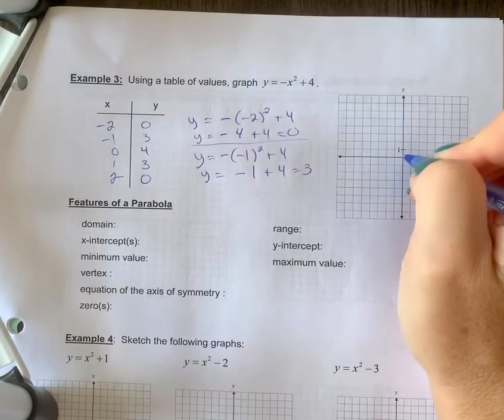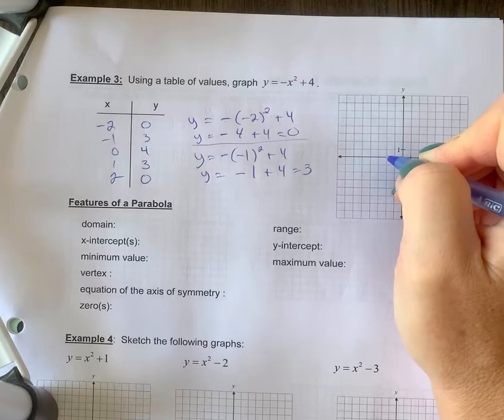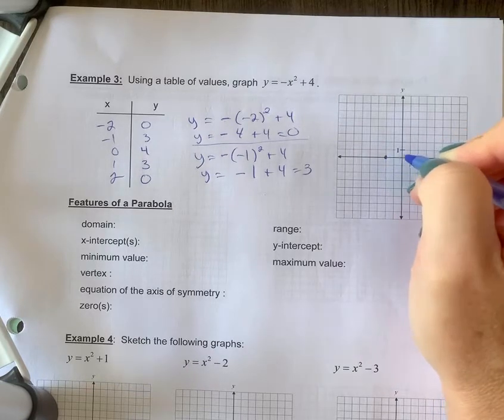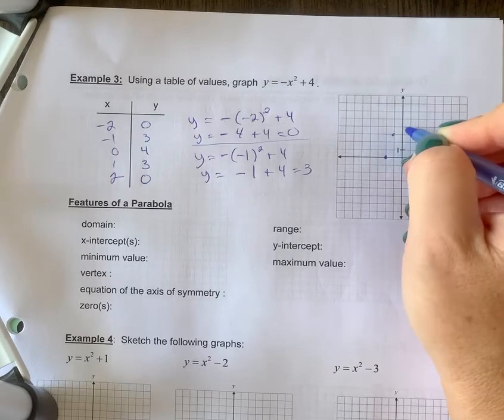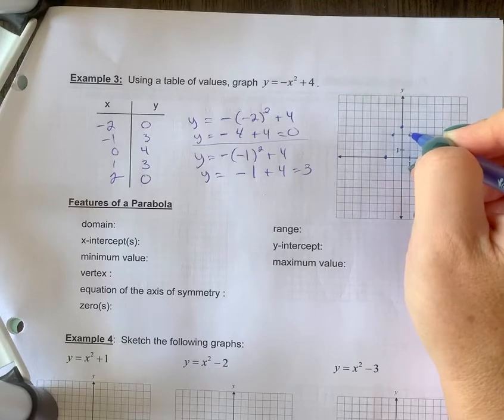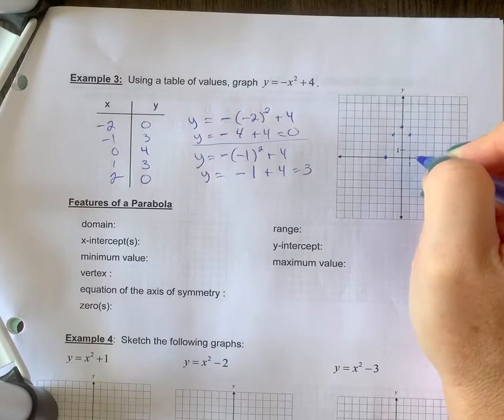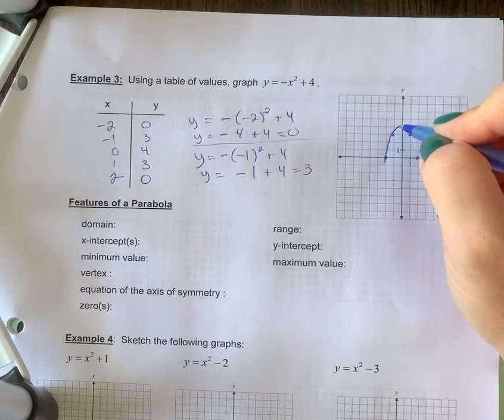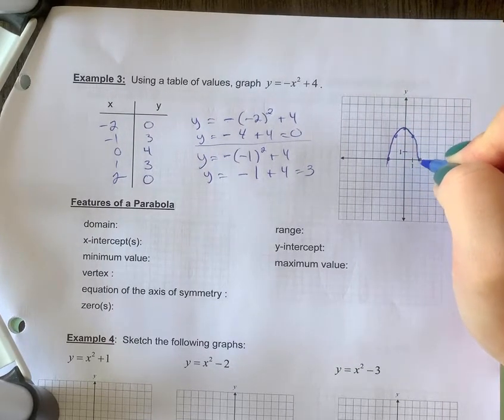So let's plot this. X-axis first, negative 2 and 0, so that's right on the x-axis. That'll be an x-intercept. Negative 1, 3. 0, 4. 1, 3. 2, 0. So what you'll notice is our nice U-shape still, not too rigid. It's a smooth curve.